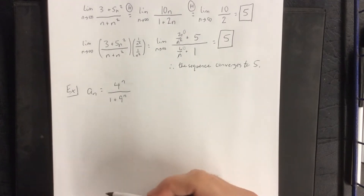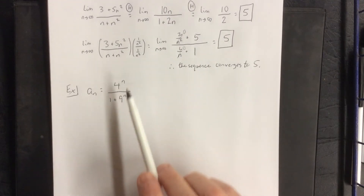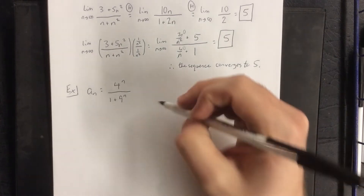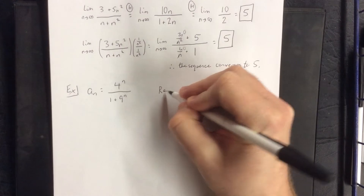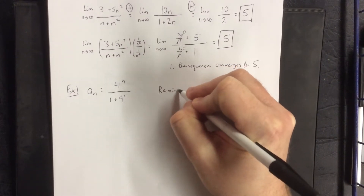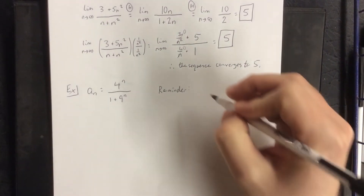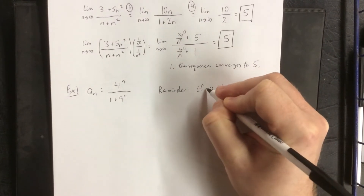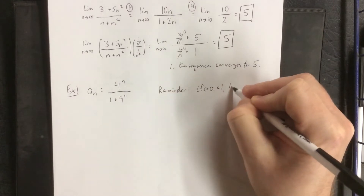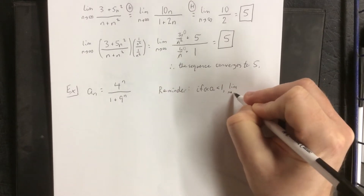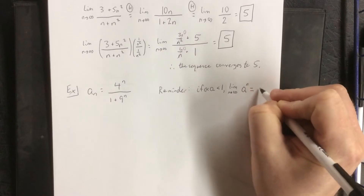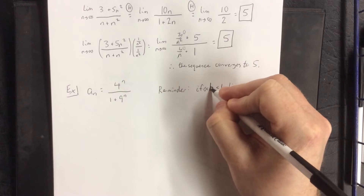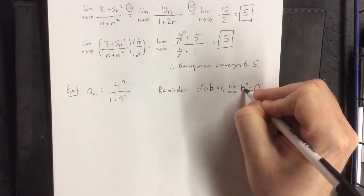For the next example, we're going to deal with some exponentials. The numerator is 4ⁿ and the denominator is 1 + 9ⁿ. As a reminder, if the base b of an exponential is less than 1 but still positive, then the limit as n goes to infinity of bⁿ is 0.